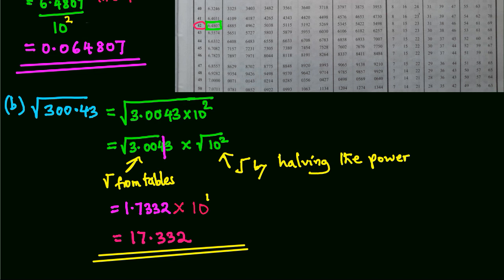In both examples, you can see that we are halving the power, and that's why n has to be even.